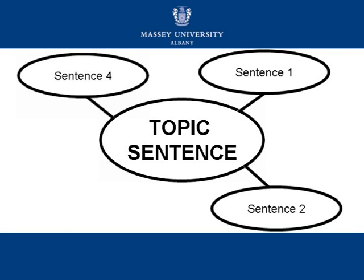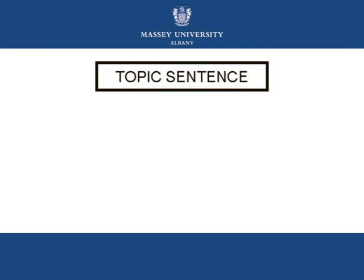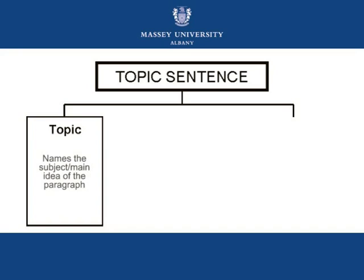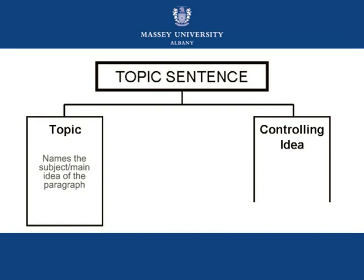If the paragraph begins with one point of discussion, it shouldn't be ending with another one. For example, if your paragraph starts talking about downsizing, it shouldn't end up talking about managerial roles — one clear, focused idea. A topic sentence essentially consists of two parts. First, we have the topic, which names the subject or the main idea of the paragraph. Then we have a controlling idea, which makes a specific comment about that main idea.